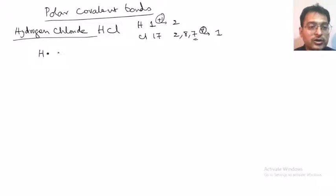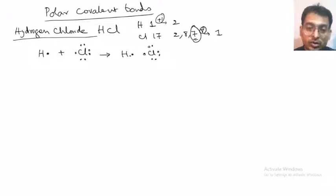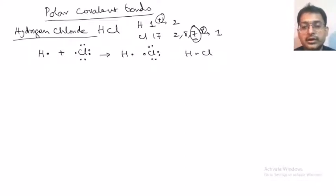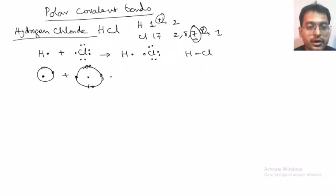Now how is the combination going to take place? Hydrogen with one electron is combining with chlorine, which has 7 electrons in the valence shell. Both of them will combine to share — they are not transferring, they are sharing this pair of electrons. We can show it as HCl — there is a single covalent bond formed between both of them.